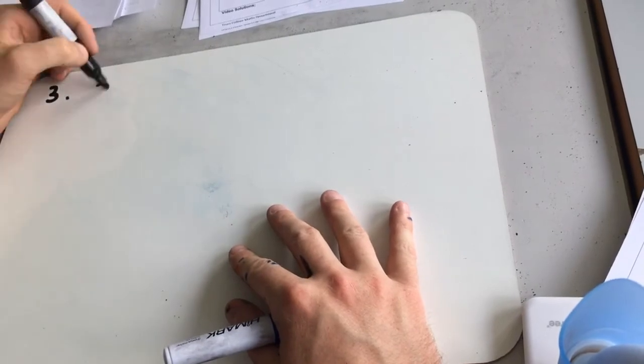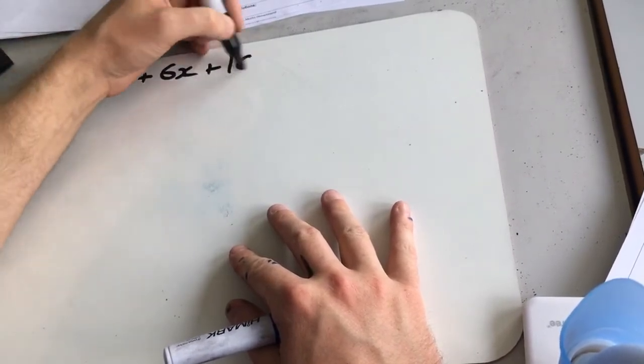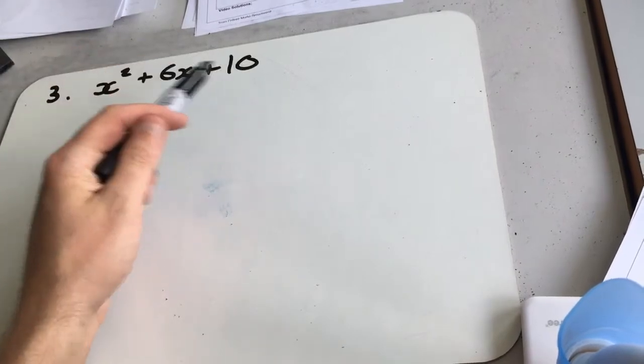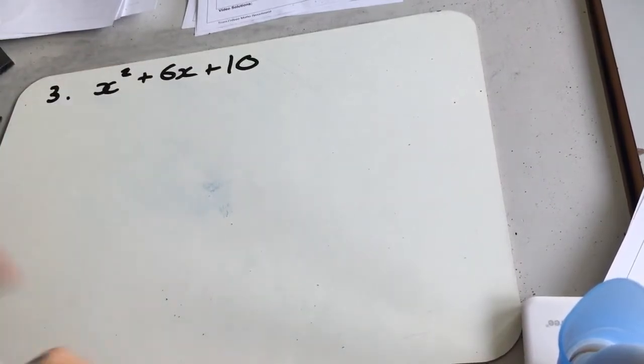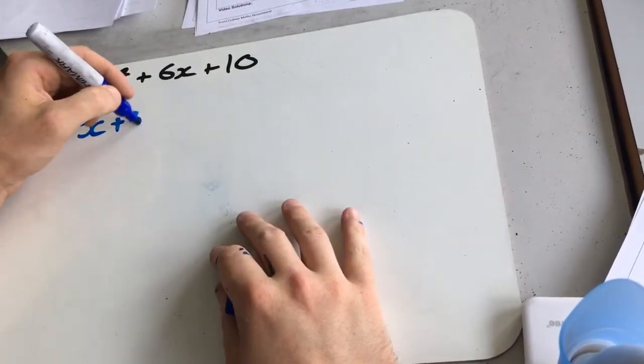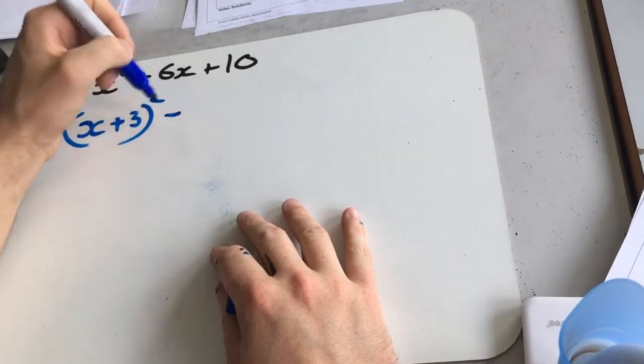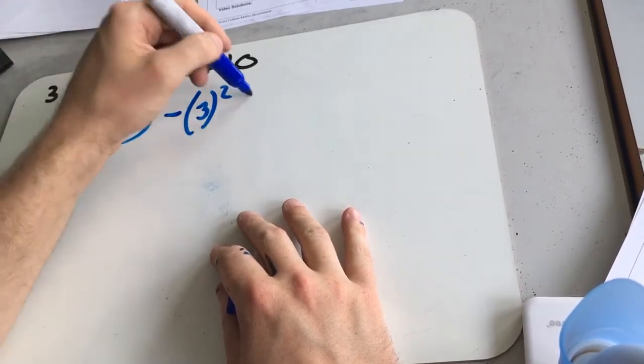Next one, x squared plus 6x plus 10. Again, we're going to ignore the 10 for a while. We're going to complete the square on this bit. So that becomes x plus 3 squared minus 3 squared plus 10.